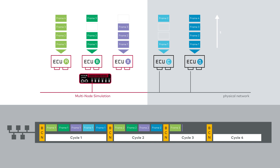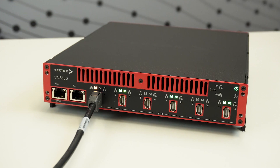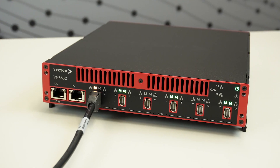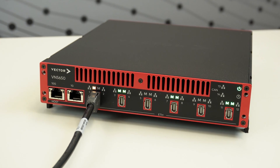This is exactly what the applications of the participating ECUs expect. The application expects that data updates distributed cyclically are also on the bus in the expected cycle or cycle sequence, while using only one physical connection to the multi-drop network.